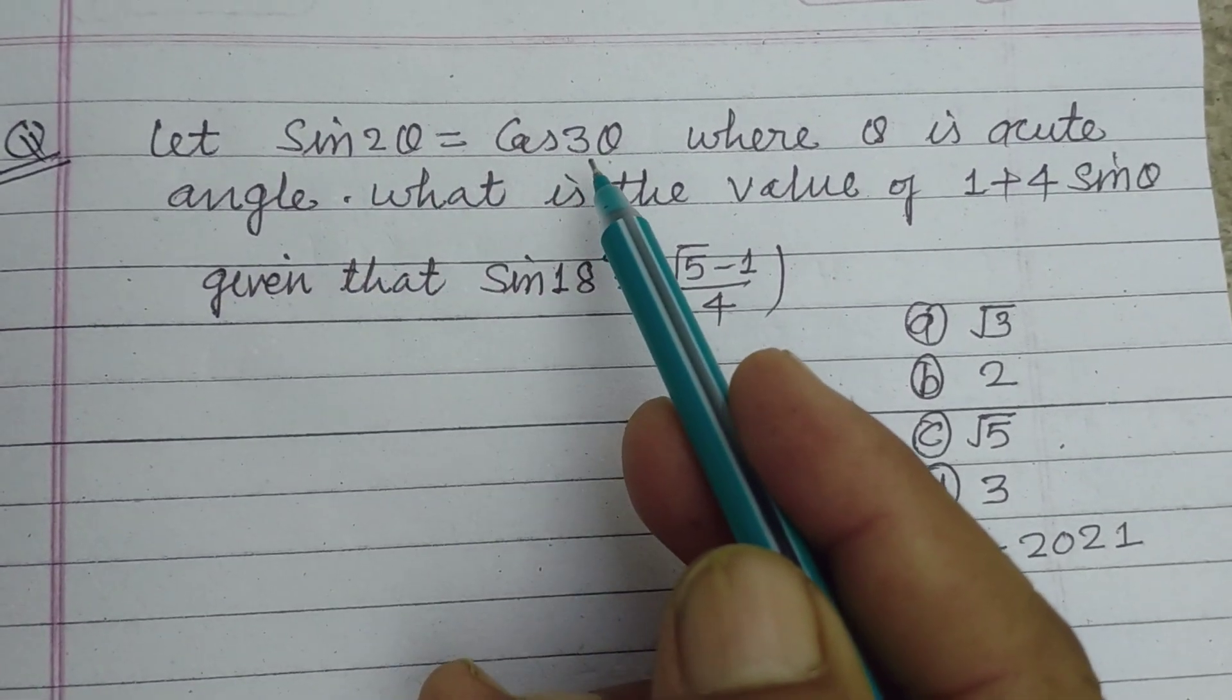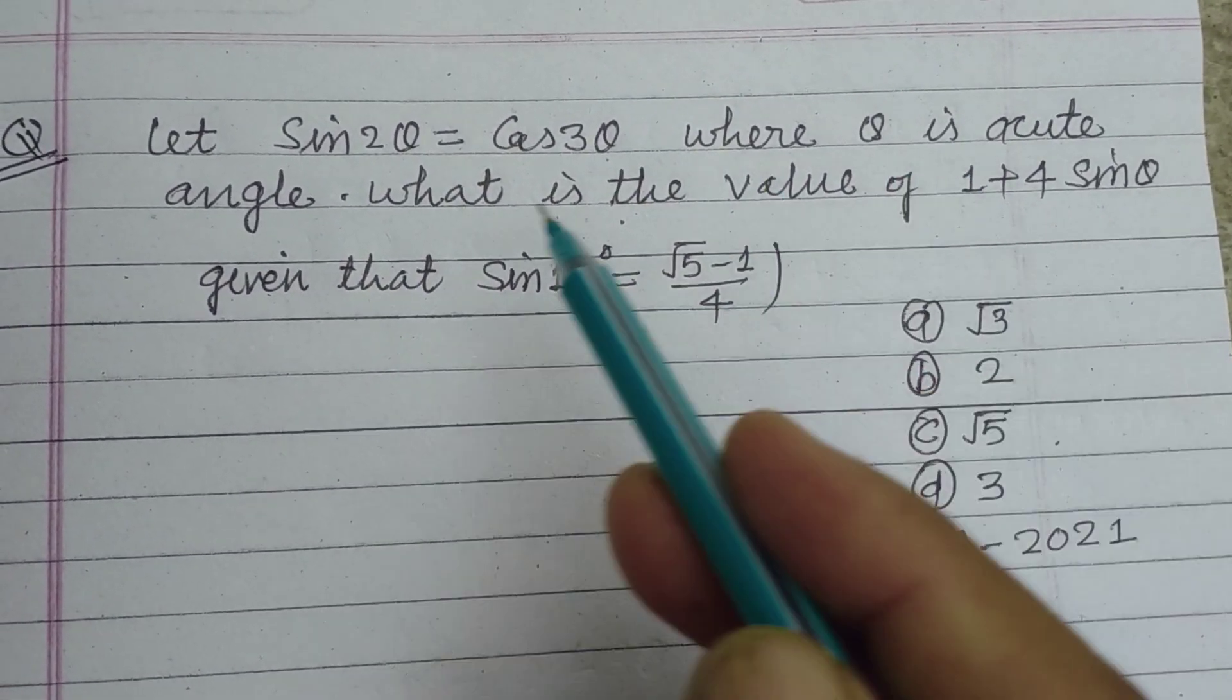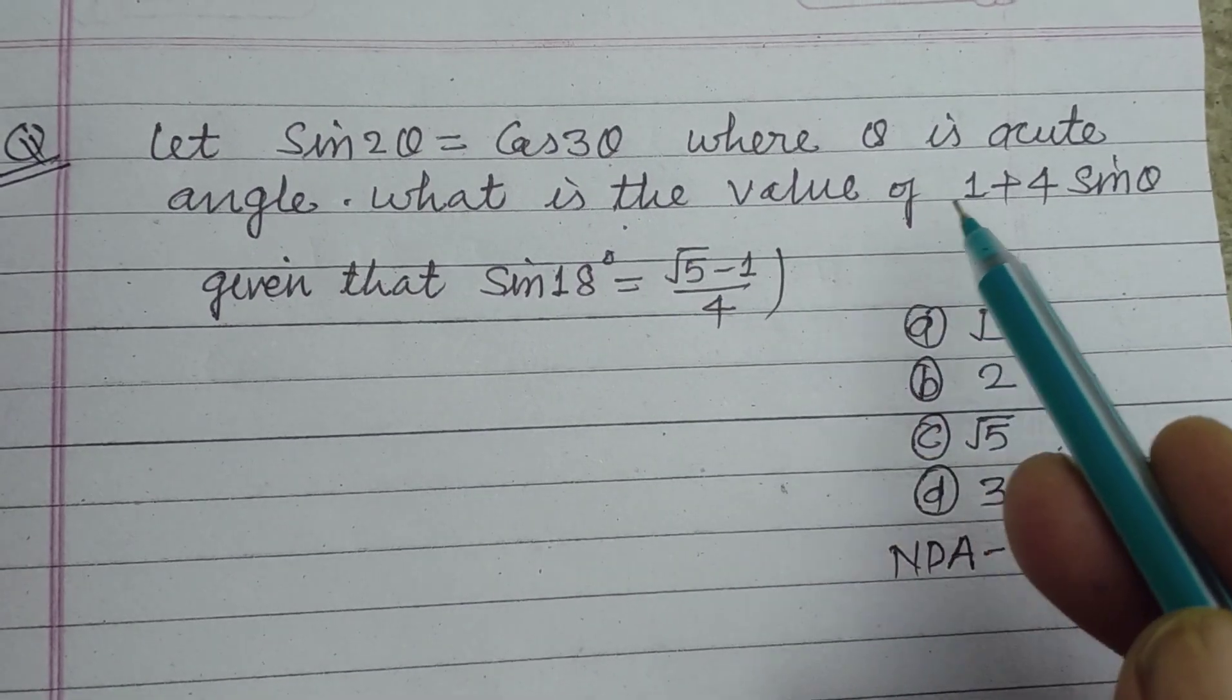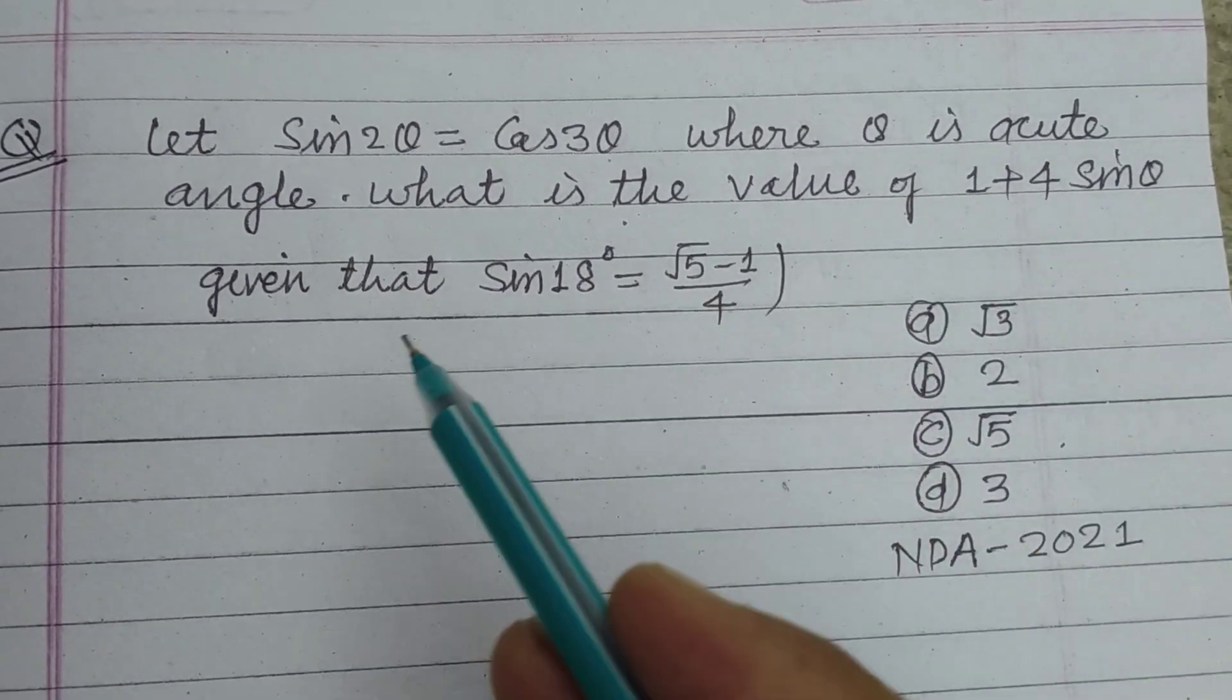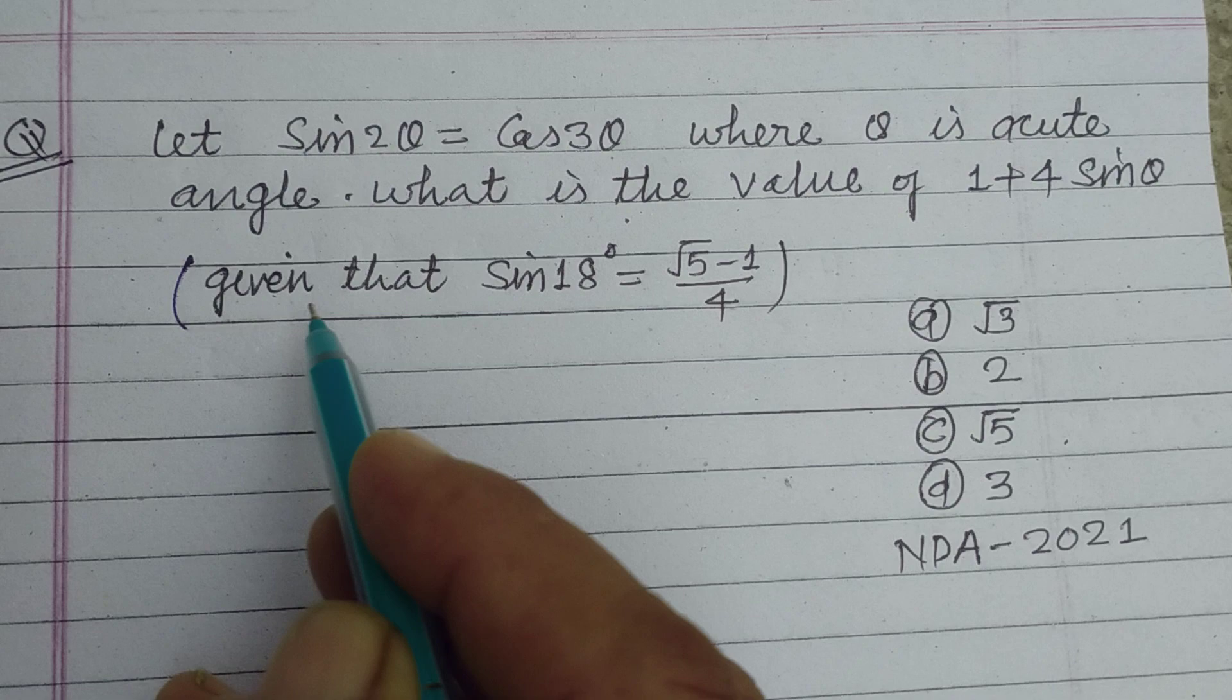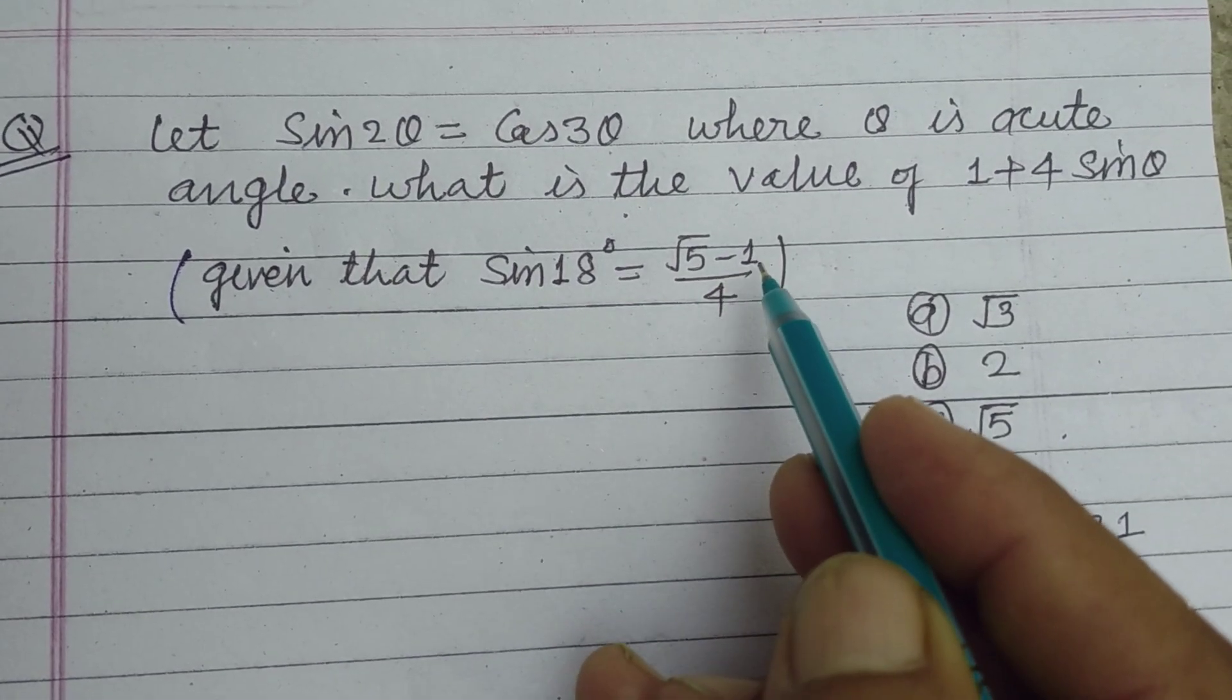Let sin 2θ equal cos 3θ, where θ is an acute angle. What is the value of 1 plus 4 sin θ, given that sin 18° equals root 5 minus 1 upon 4?